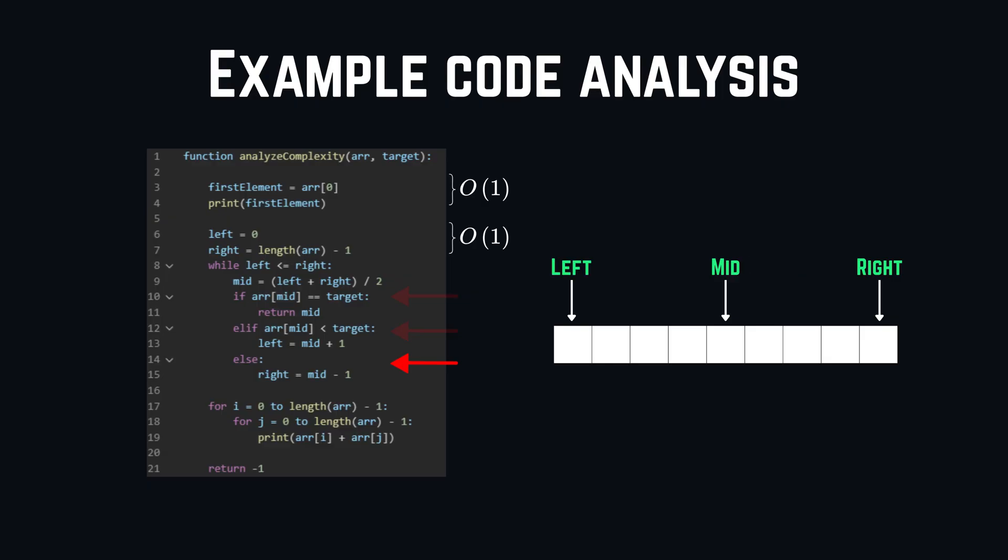Similarly, things happen in case 3. If mid is bigger than the target value, the right pointer gets updated with mid minus 1. Then, it happens everything again. If we look closely now, aren't we not just halving our array every single time?